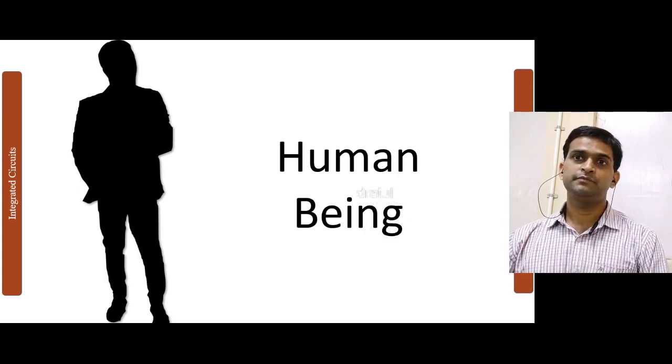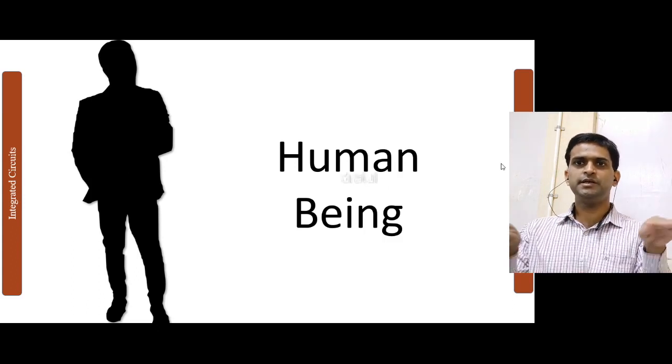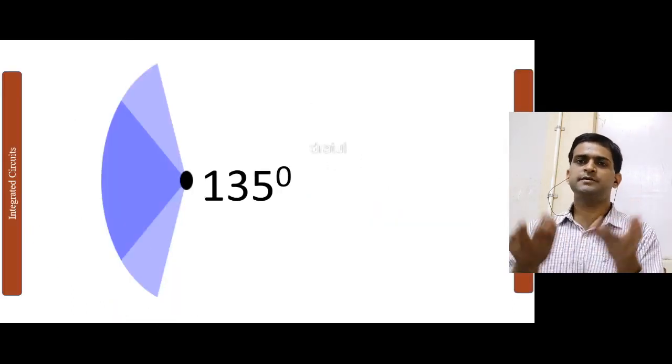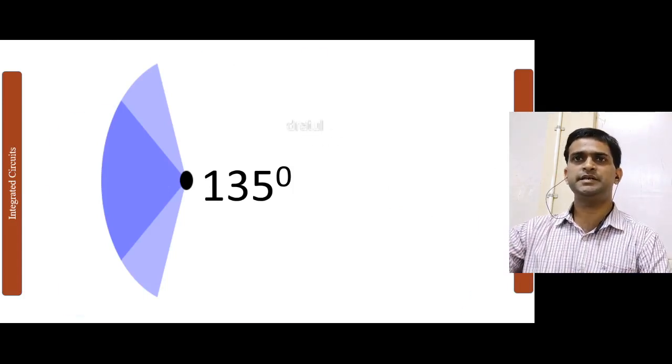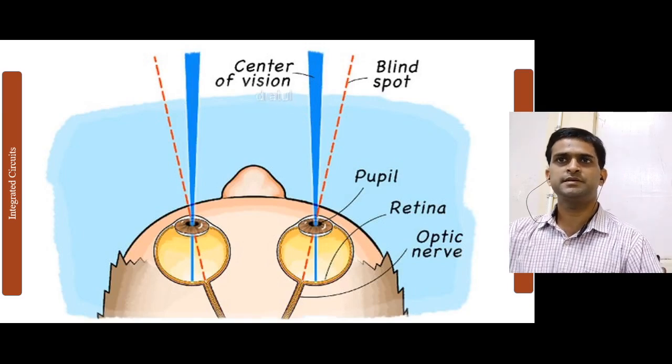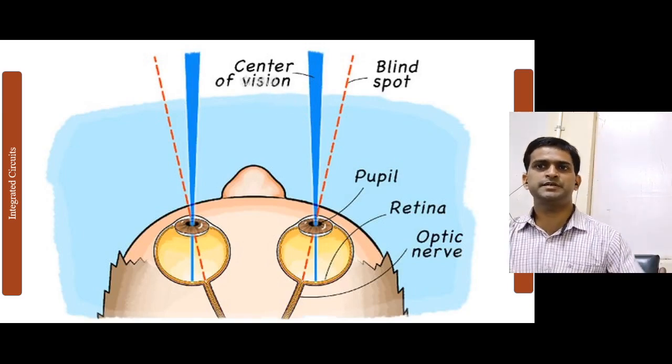We can see within 120 degrees horizontally and 135 degrees vertically. There are some blind spots also in our vision. In addition to this, human eye can only perceive the wavelengths within the range of visible spectrum.